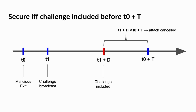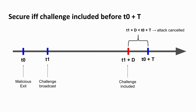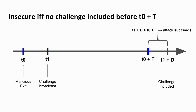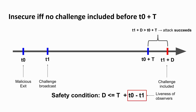About the liveness requirement: if I start an exit at time zero, there is a finite amount of time until the exit can be finalized. If somebody broadcasts a challenge, the time until the challenge transaction is verified must be before that deadline. If there's on-chain congestion and the challenge is included after T0 plus T, the challenge will not be successful. So we need to guarantee the challenge is always included before T0 plus T — you do that by making sure the fee is high enough and that T is big enough. T is a security parameter.